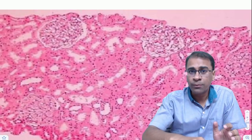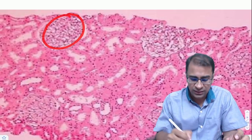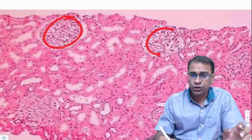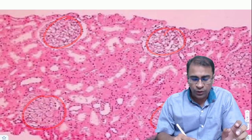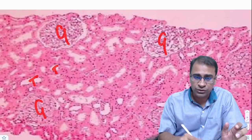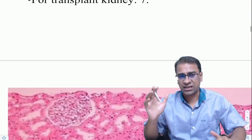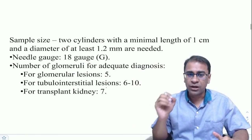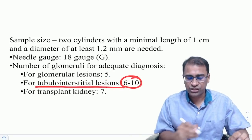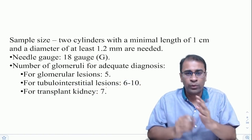Let's start with the normal kidney biopsy. In a normal biopsy you should understand: this is a glomerulus, these are all the tubules, and between them are the interstitial areas. When you call a biopsy adequate, you need at least five glomeruli for a global disease, six to ten for a tubular or interstitial disease, and at least seven glomeruli for a transplant kidney.